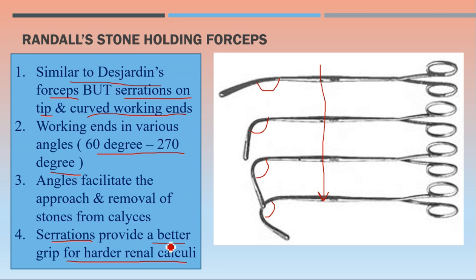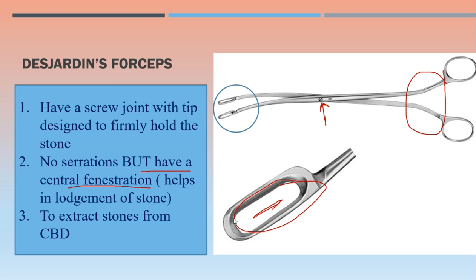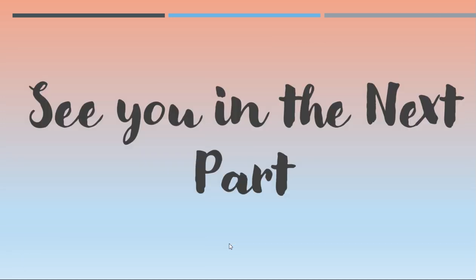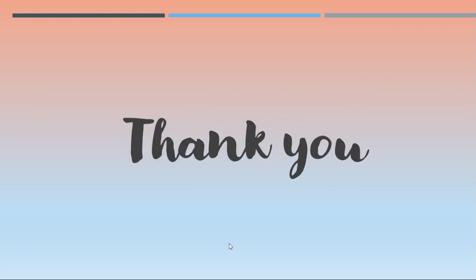The serrations provide a better grip for harder renal calculi, as renal stones are usually harder than common bile duct stones. So serrations and curved working ends differentiate Randall stone-holding forceps from Desjardin's forceps. These forceps also have no lock, to prevent injury during stone removal at the local site. That's all in this video — see you in the next part covering more instruments.